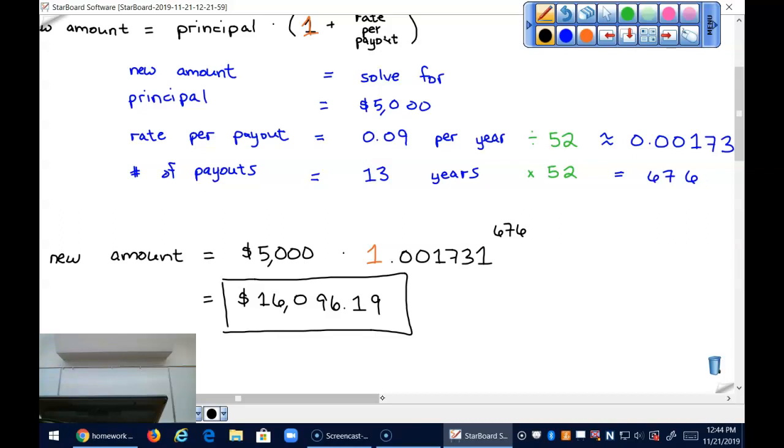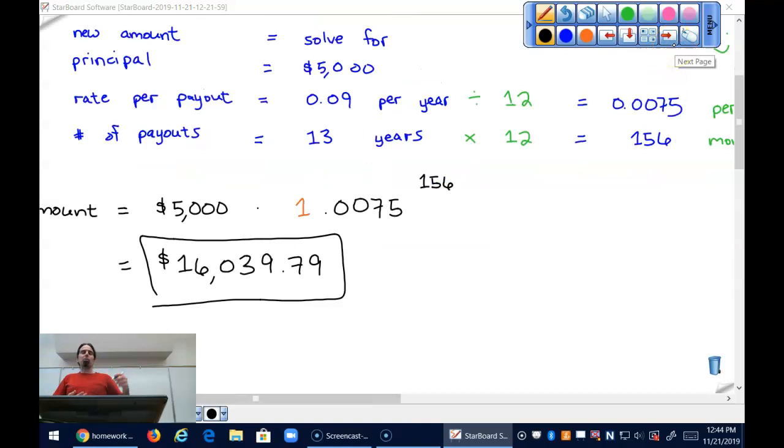So here it's going to be one point zero zero seven five to the exponent 156. So a little over sixteen thousand. Why would the first brother have slightly more money than the second brother? You rounded a little differently here, which is fine. The first is probably more accurate, but we still hold a slightly bigger number for the first duck than the second. Does it make sense that the first brother that has more compounding comes out with slightly more money? Yeah, there's more chances for the money to build on itself.